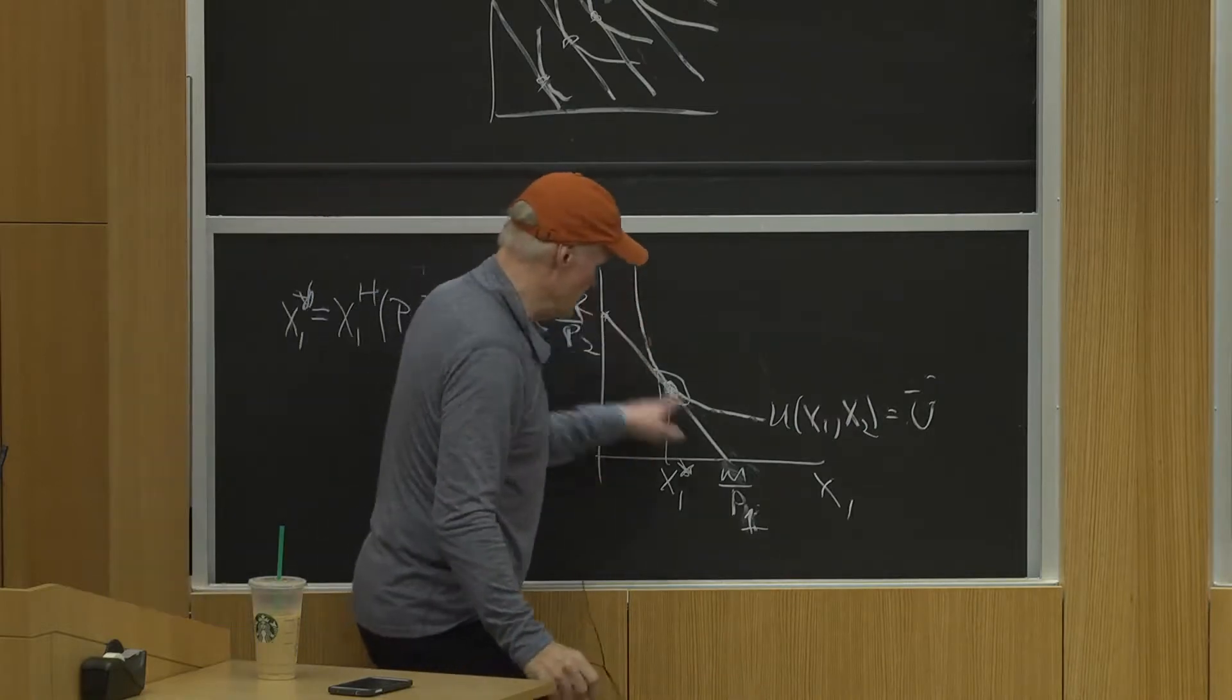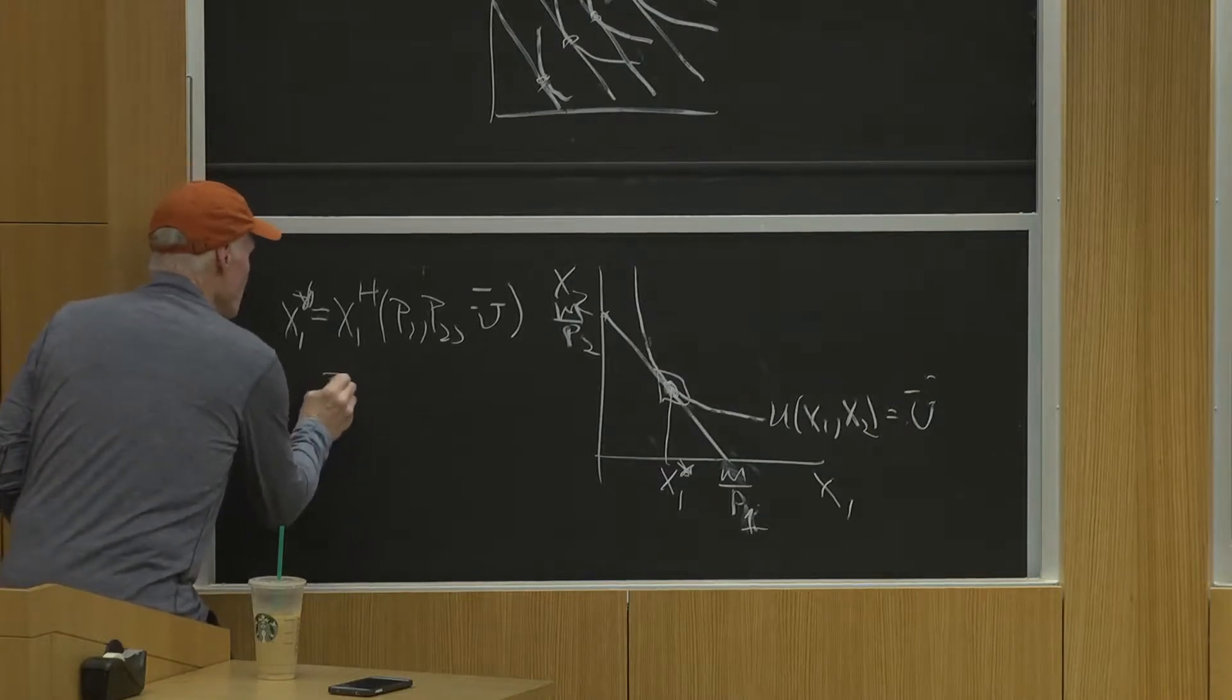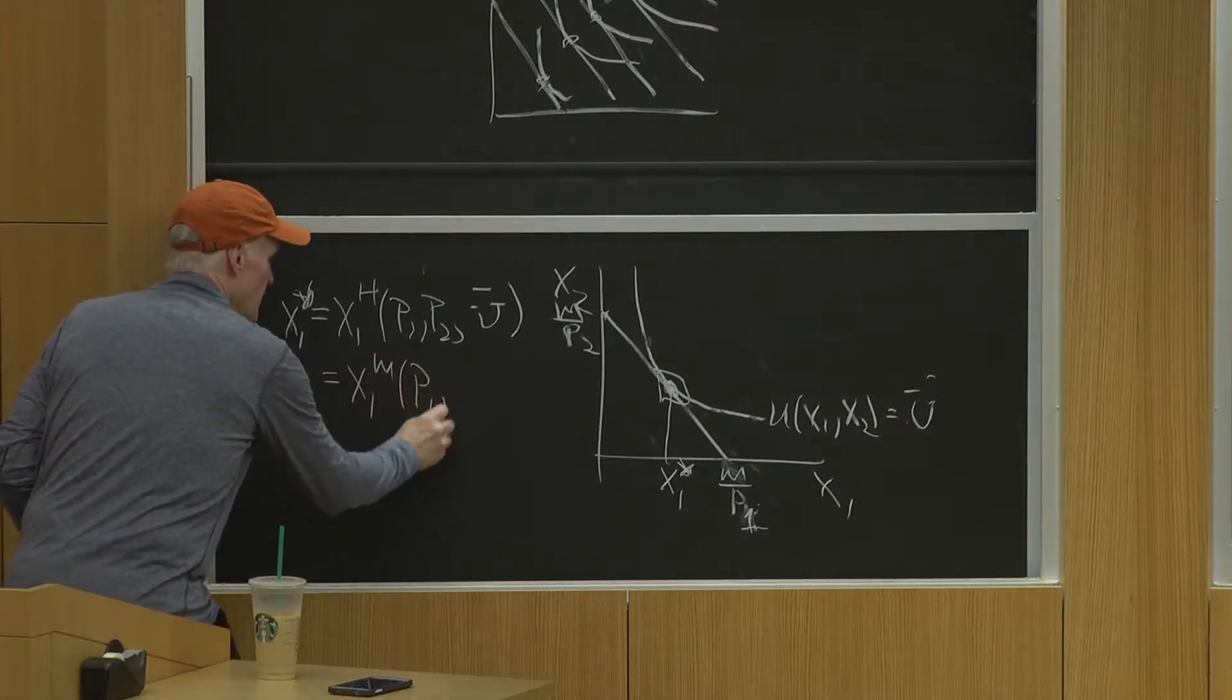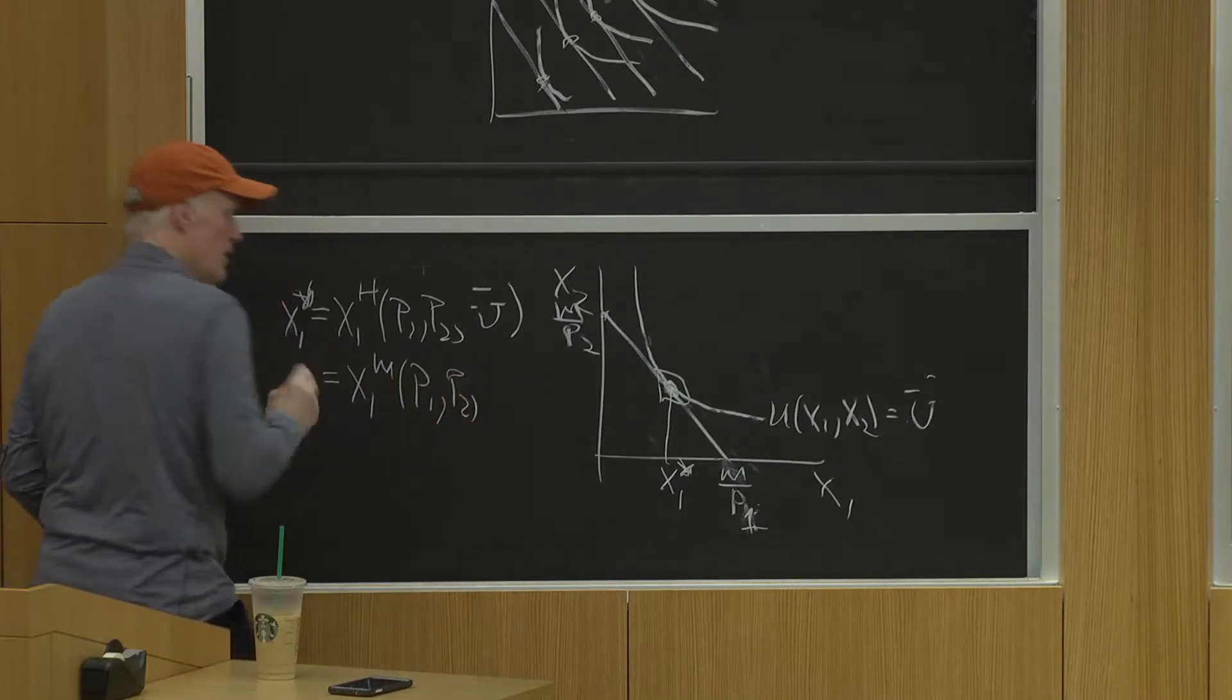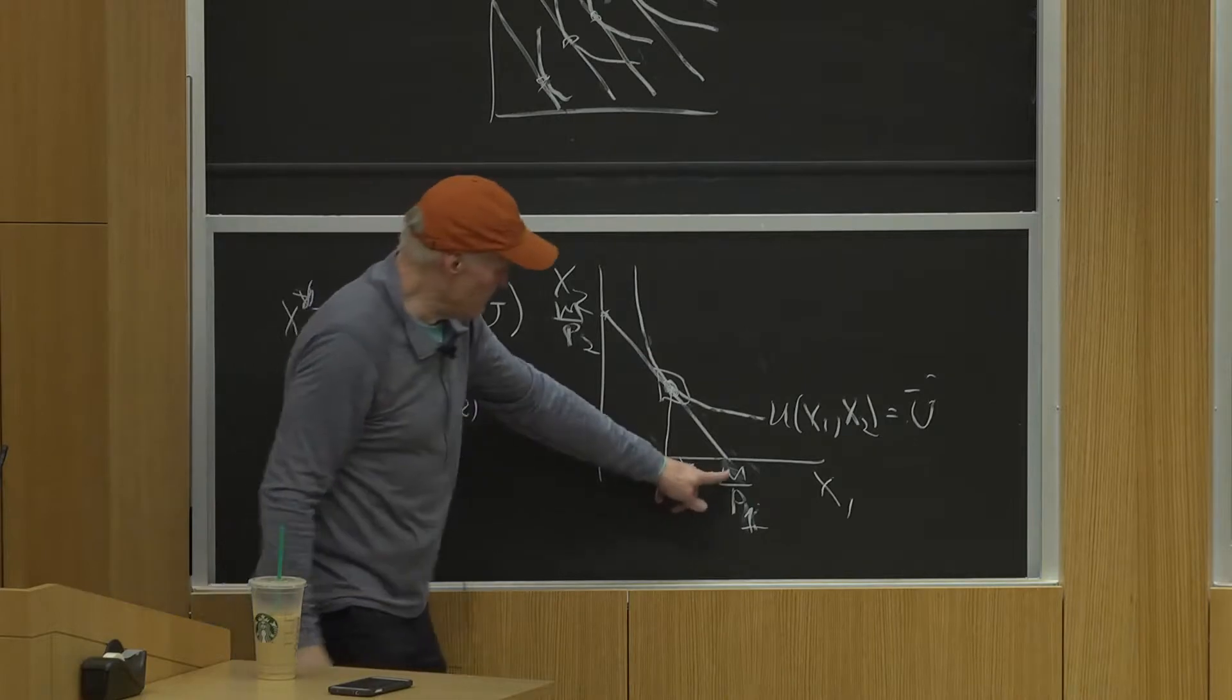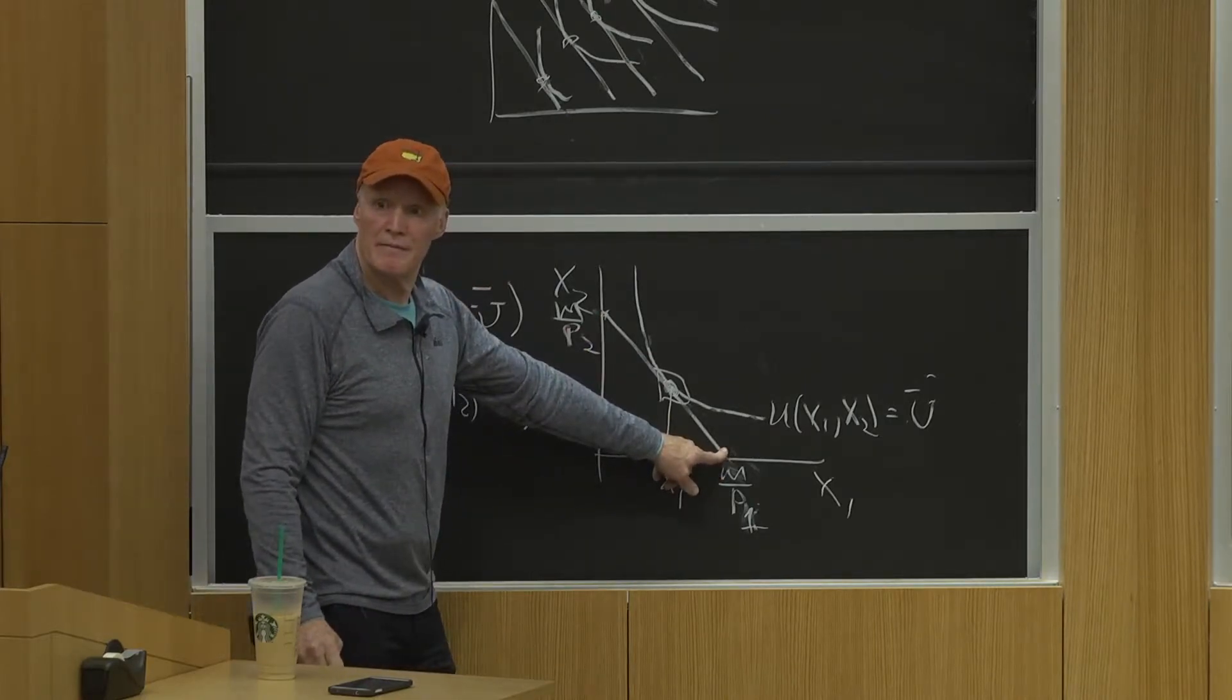Because this is the indifference curve, u bar. I could also say it's also equal to x1m of P1, P2, and m, where m is the value that's associated with that budget line. People see that?